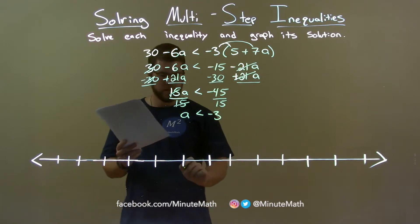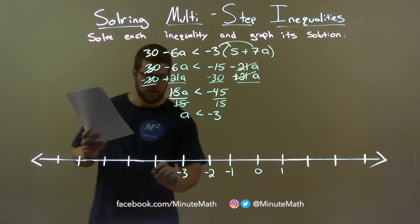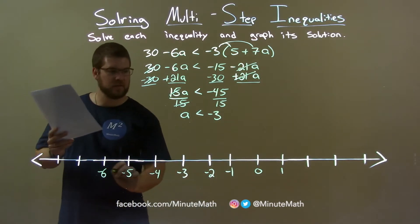So, let's graph this. Negative 3 is right here. Negative 2, negative 1, 0, 1. Negative 4, negative 5, negative 6 here.